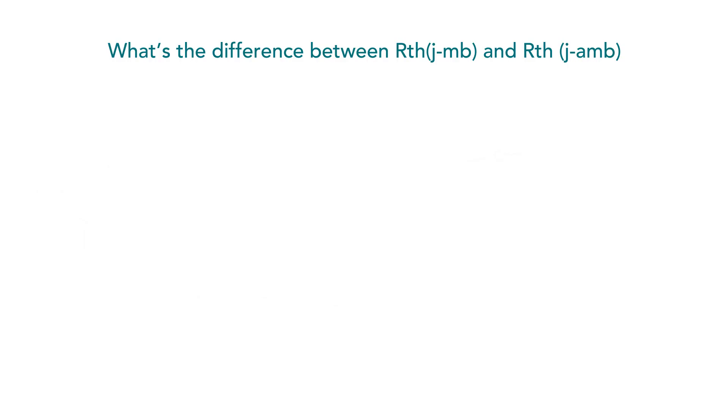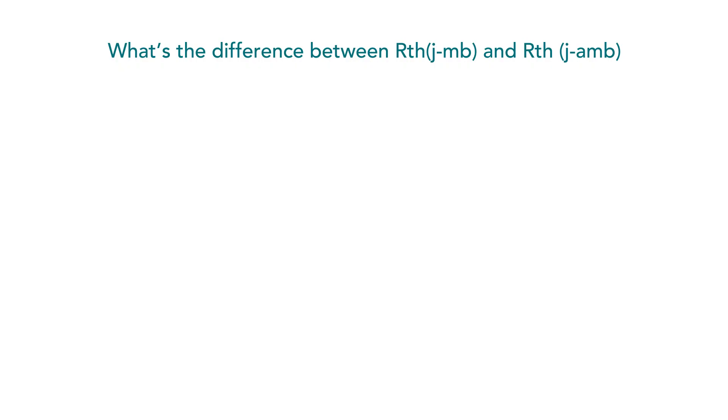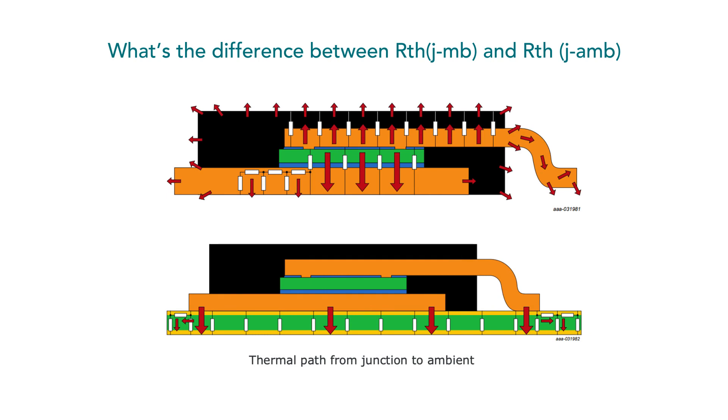The thermal resistance junction to mounting base describes the ease with which the heat is conducted along the path from the junction to the mounting base. The value of the RTH junction to mounting base is provided on our MOSFET datasheet.